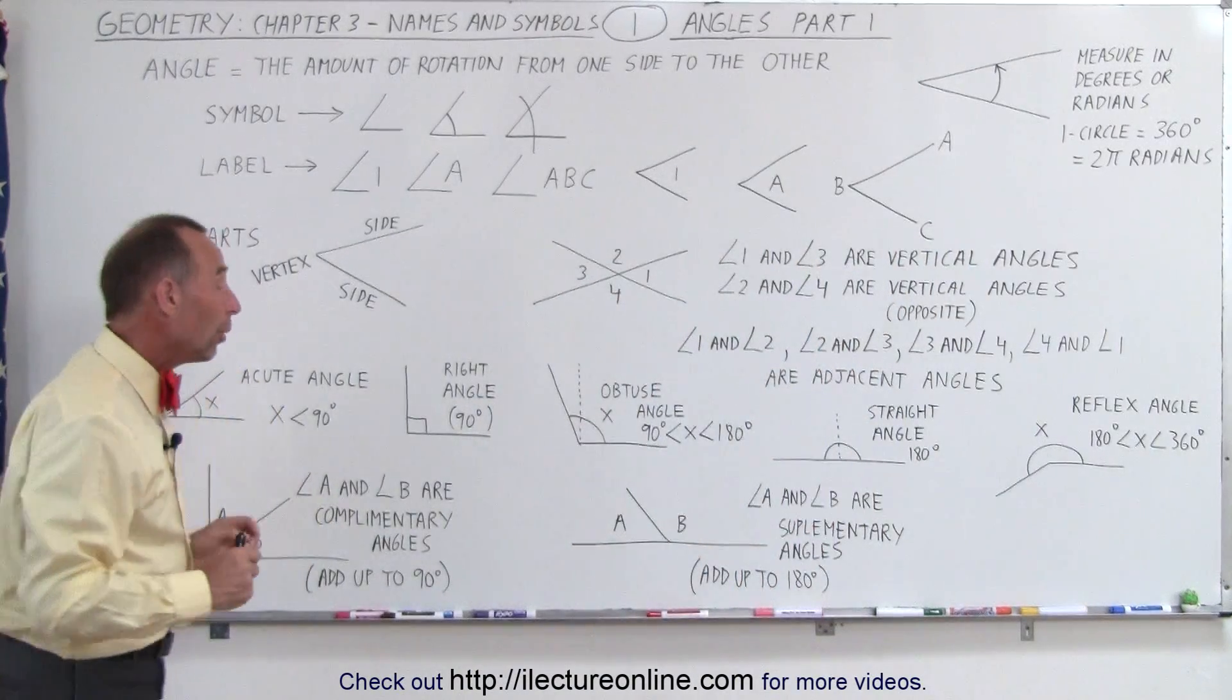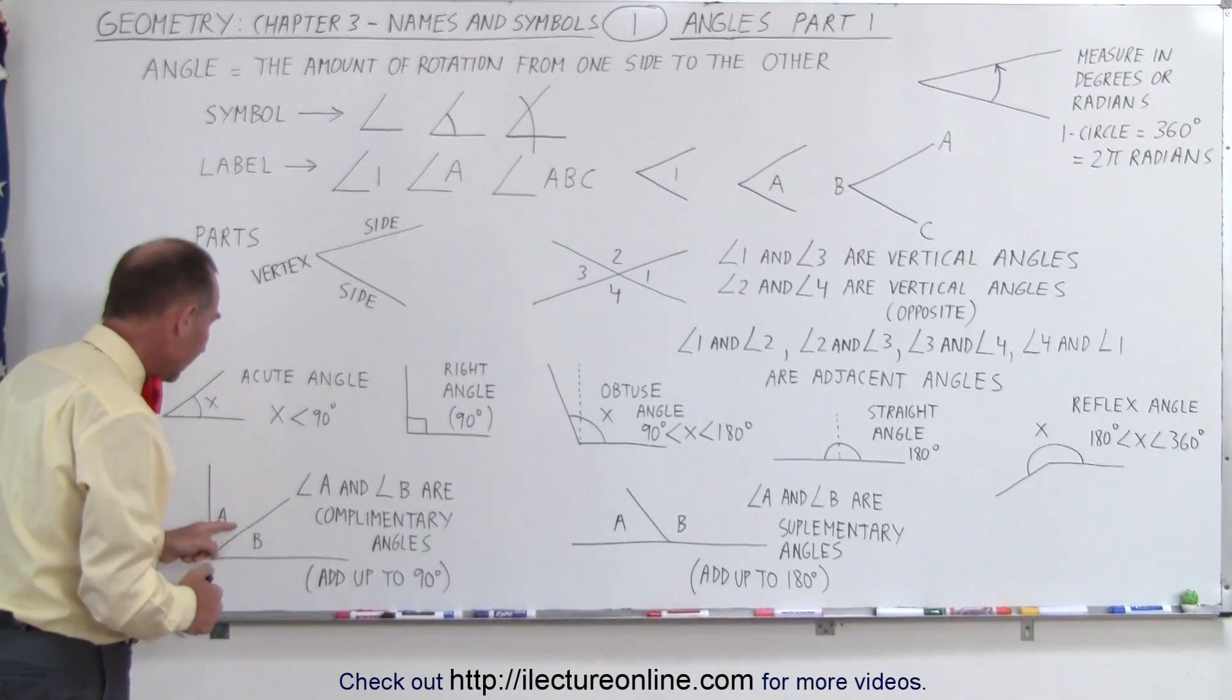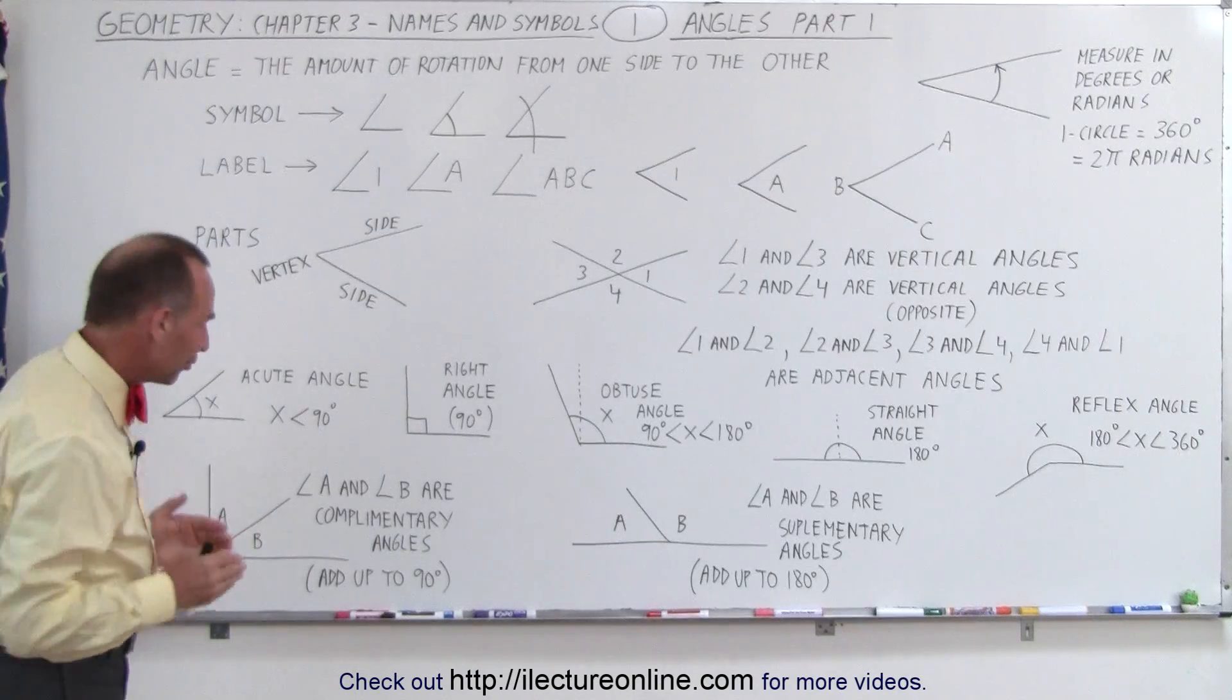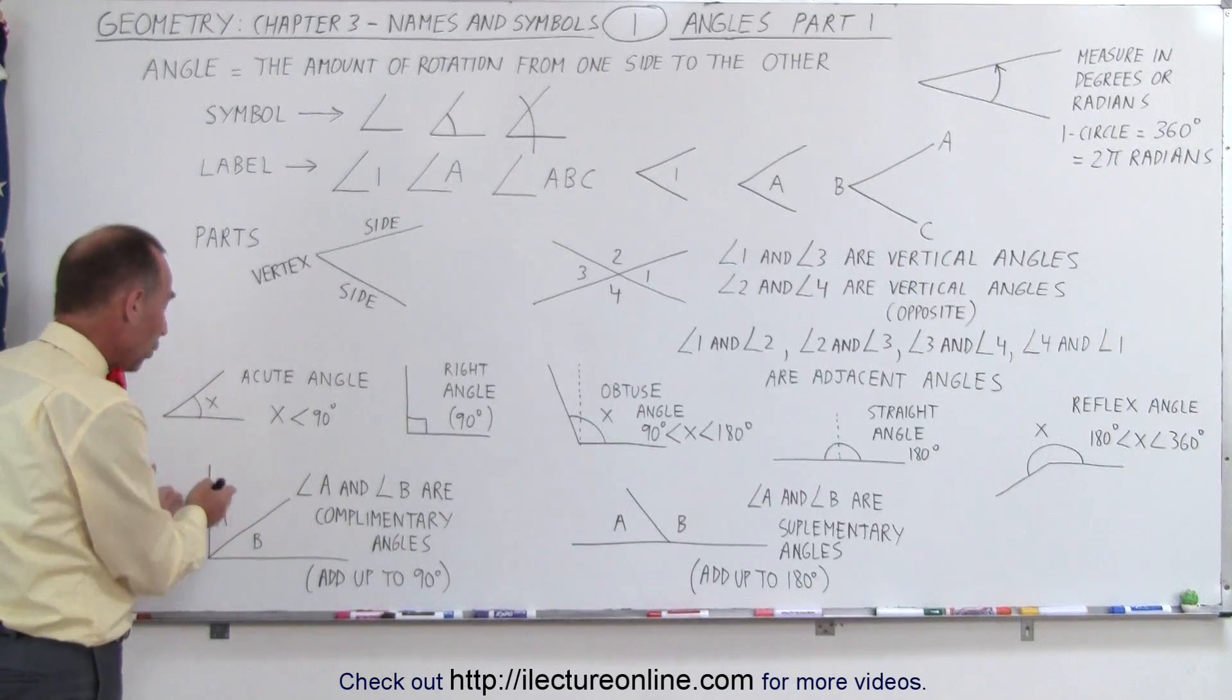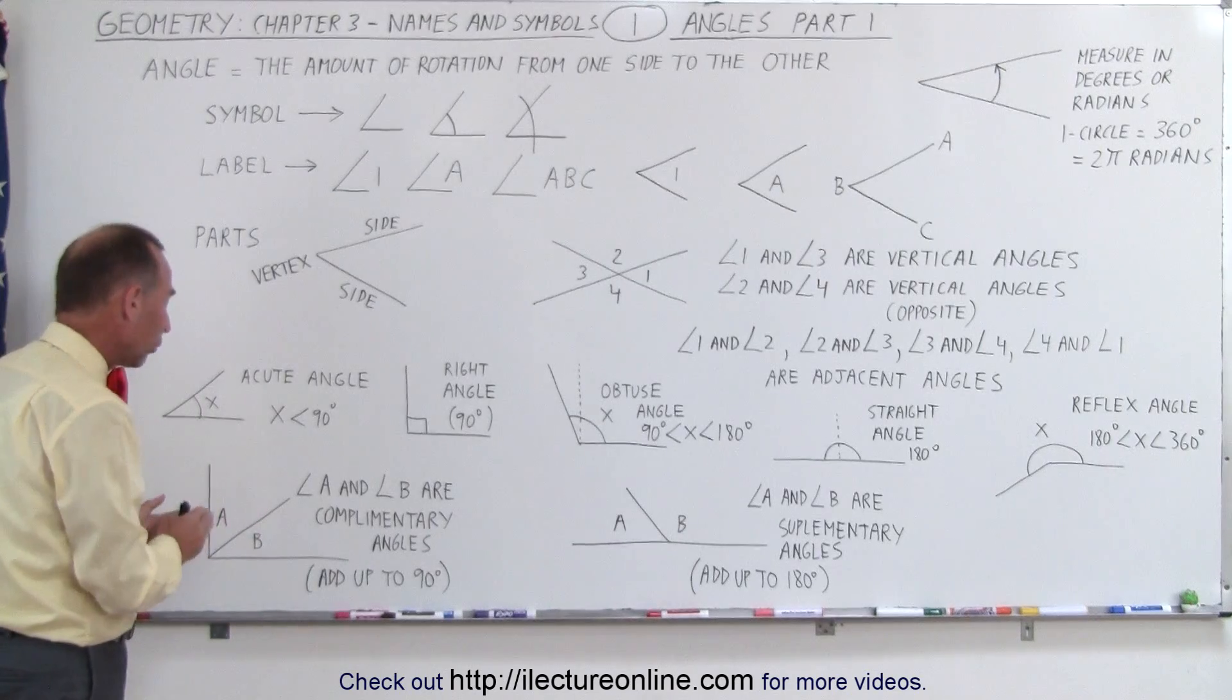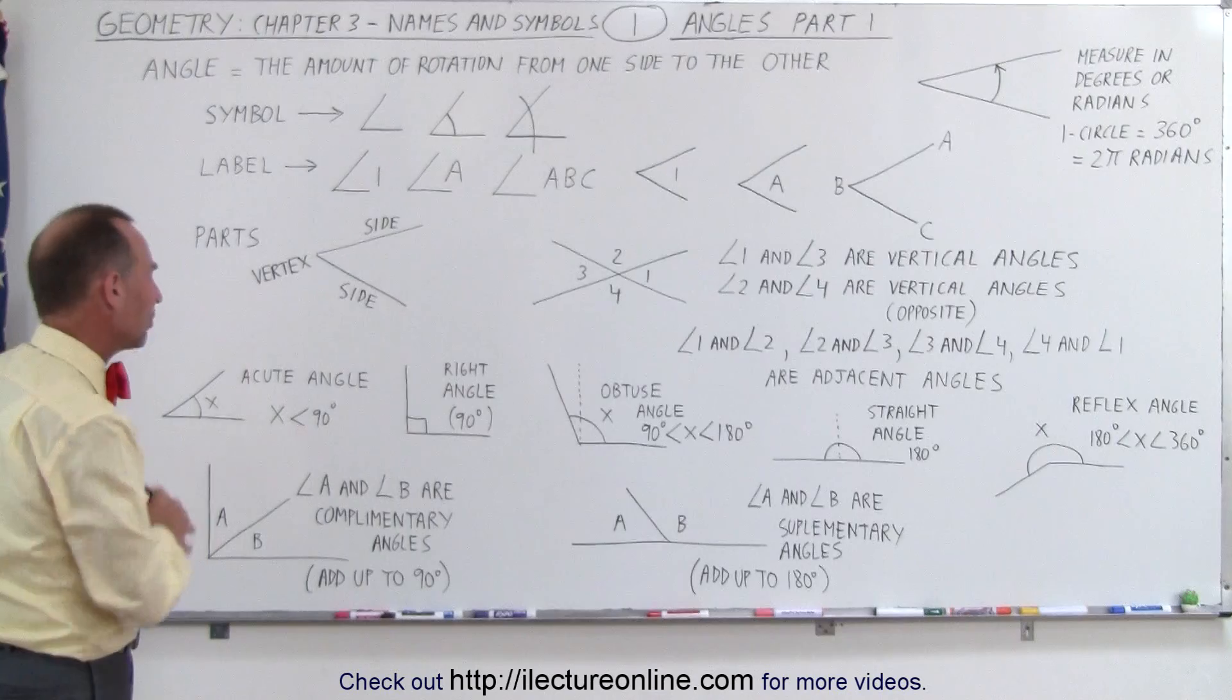Some other things that we need to know about angles is that when we have two angles side by side, like angle A and angle B, so they share a common side, if the two angles together add up to 90 degrees, we call them complementary angles. So they both add up to 90 degrees. Let's say angle A is 60 degrees, angle B is 30 degrees, 60 plus 30 is 90, therefore they're called complementary angles.